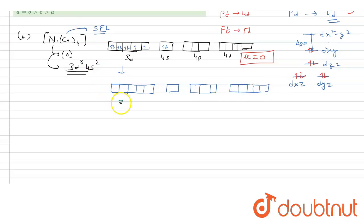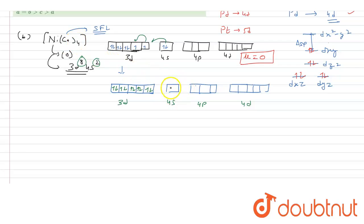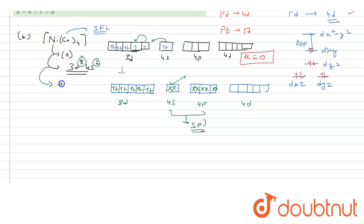After pairing, all 10 electrons are accommodated in 3d and 4s-related orbitals. With four ligands, the hybridization uses one s orbital and three p orbitals, giving sp3 hybridization. All electrons are paired, so there are no unpaired electrons, and μ = 0. This complex is tetrahedral and diamagnetic.